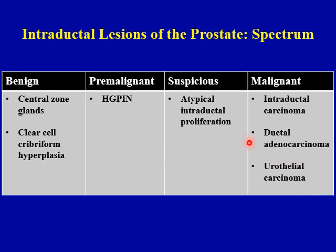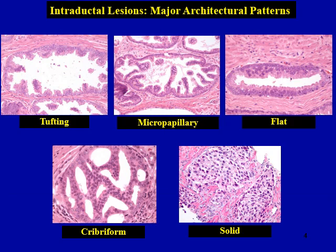Ductal adenocarcinoma and urothelial carcinoma are technically not considered pure intraductal lesions, but both can have a prominent intraductal component or spread, and therefore they are important entities to be considered in the differential diagnosis. Intraductal lesions can present with one of five architectural patterns shown here in this slide, and mixtures of growth patterns also commonly occur.